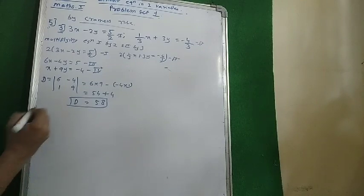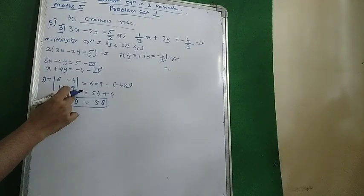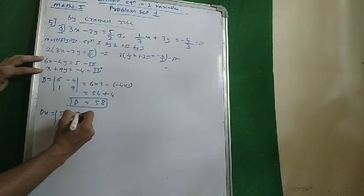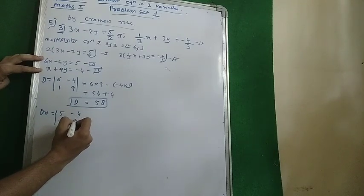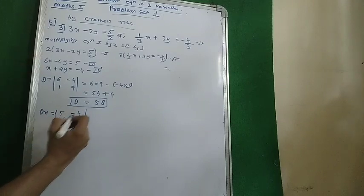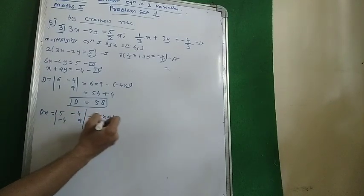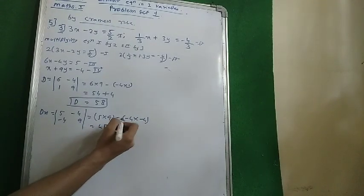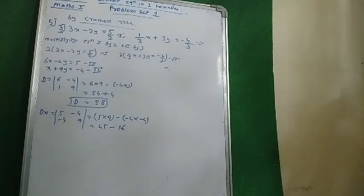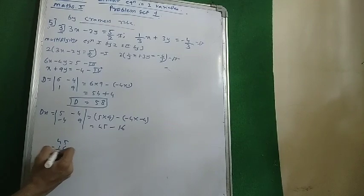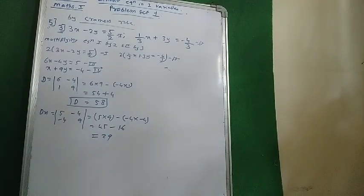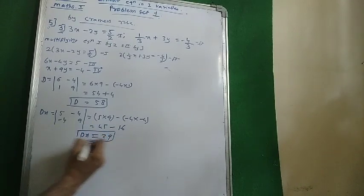Now we will find the value of Dx. Whatever was left in the first part — the constants — should come first, so 5 and minus 4 come first. For Dx, we don't write the values of x, so we use 5, minus 4 and 9. So 5 nines are 45, minus (minus 4 into minus 4) — minus minus becomes plus inside — so minus 16. 45 minus 16 is 29. So 29 is the value of Dx.